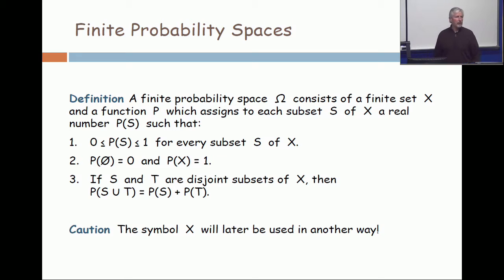The first one is that the probability of any set is somewhere between 0 and 1. Now, it's not an integer in general. It's not even a rational number in general. Second property, the probability of the empty set is 0, and the probability of the whole set is 1.